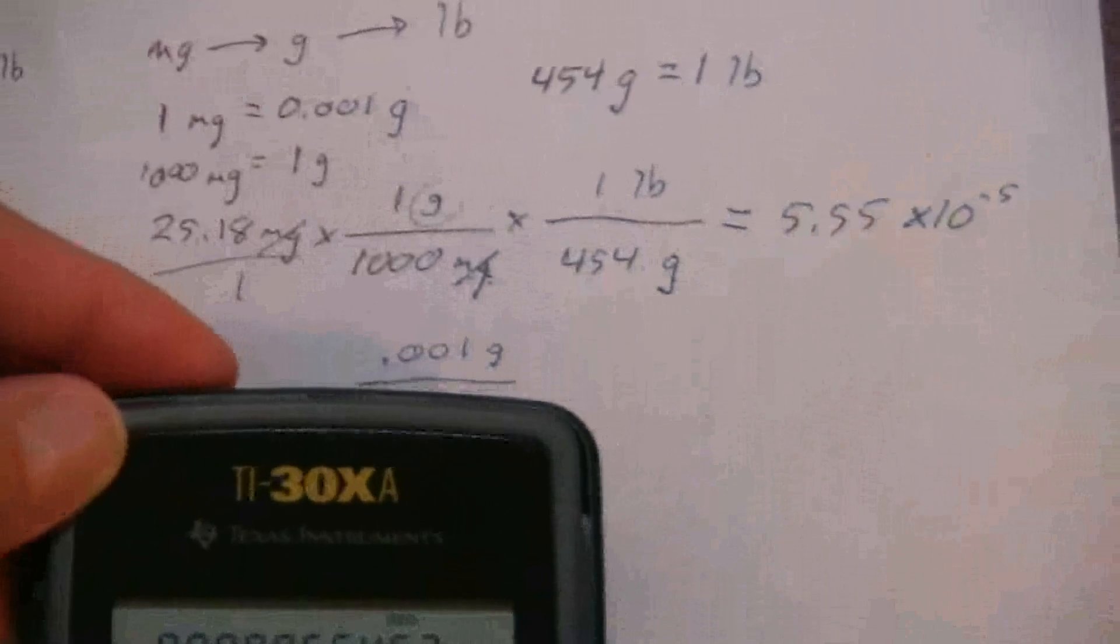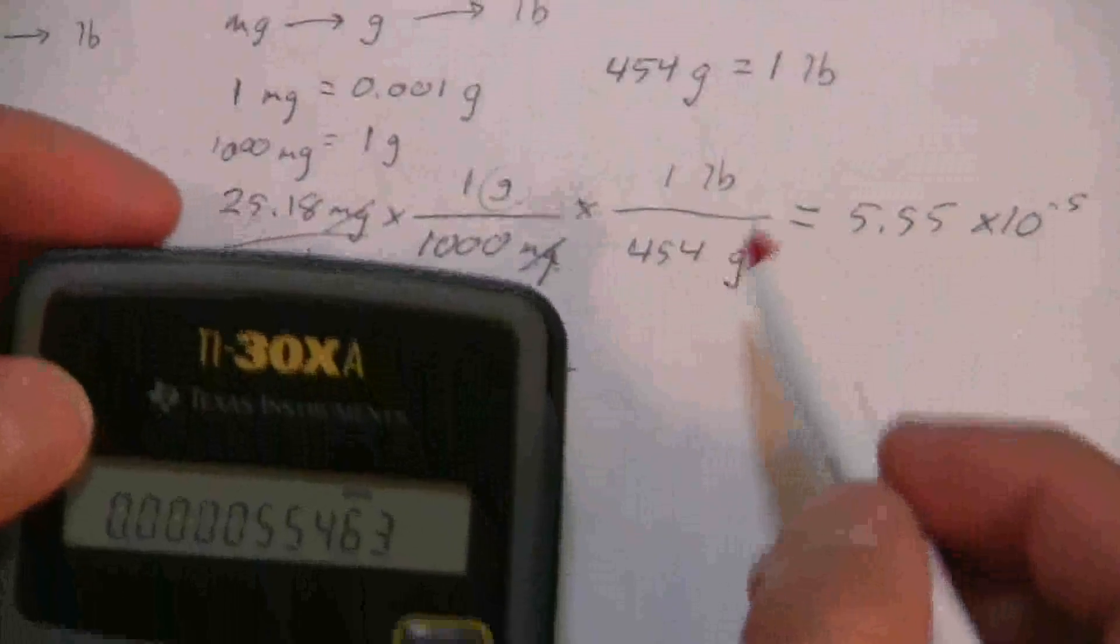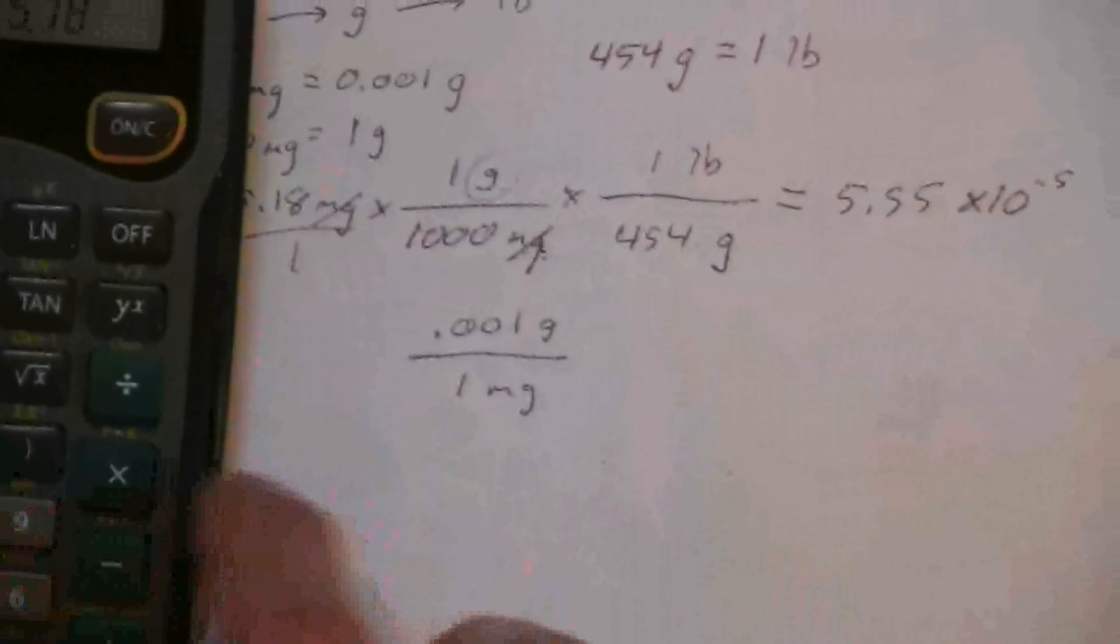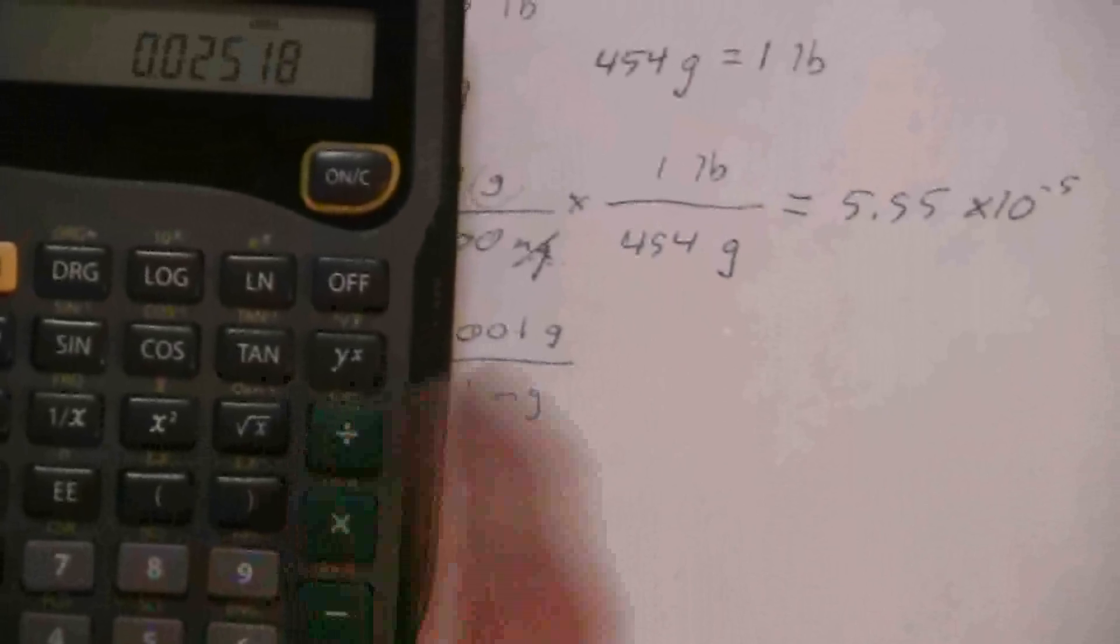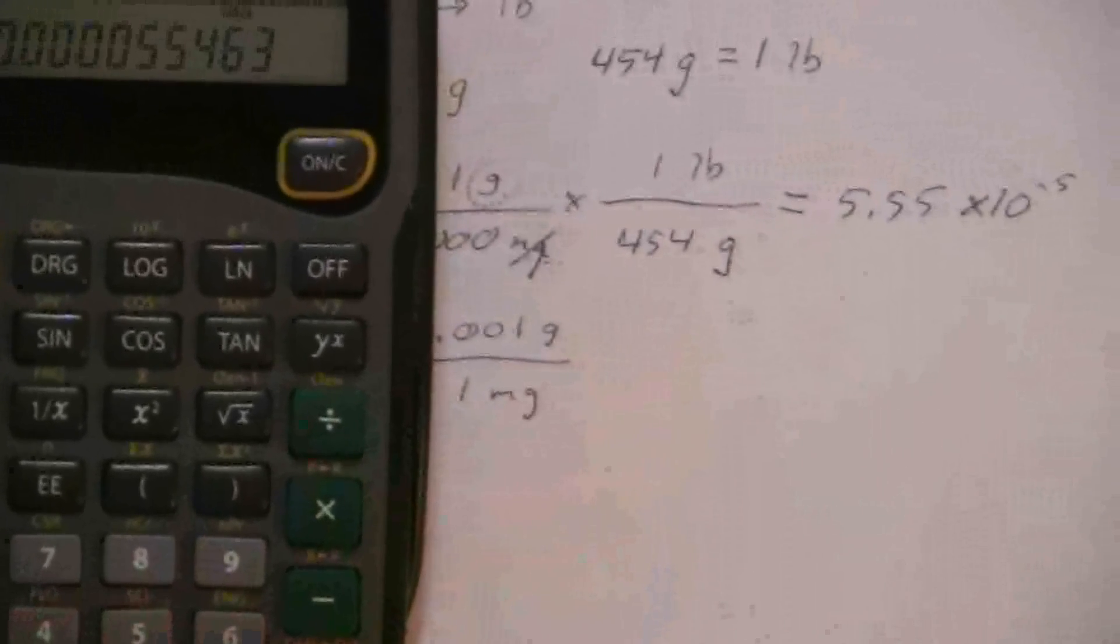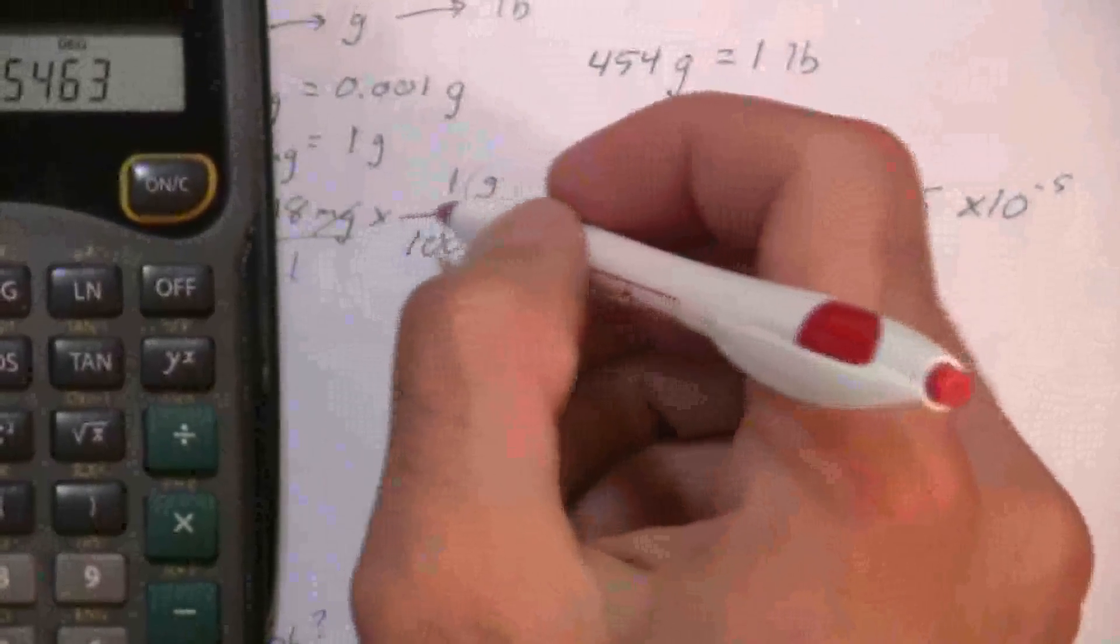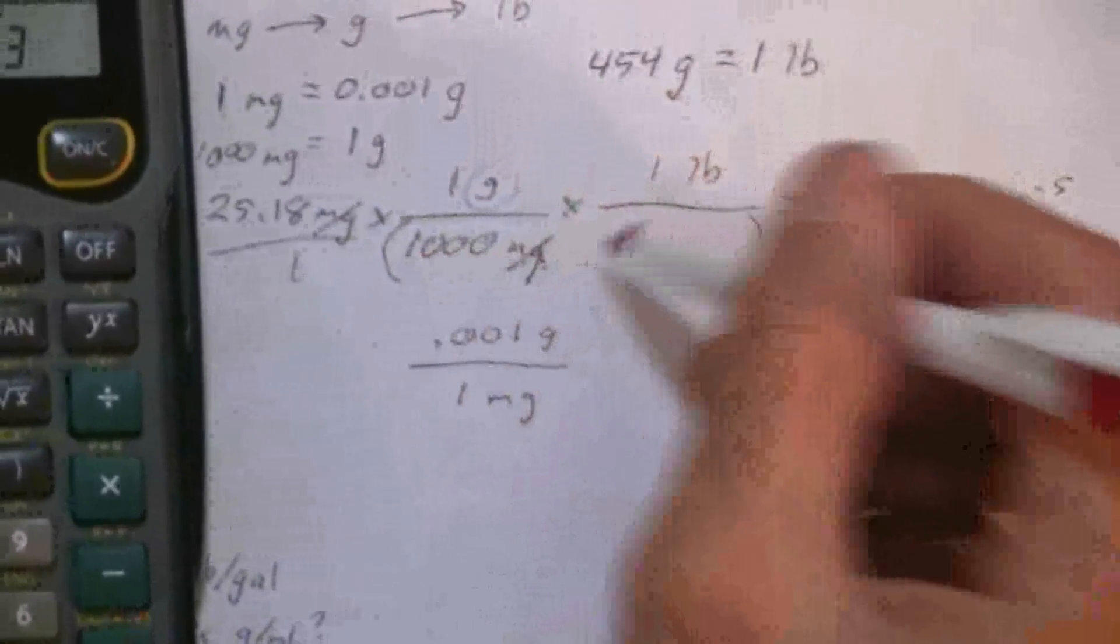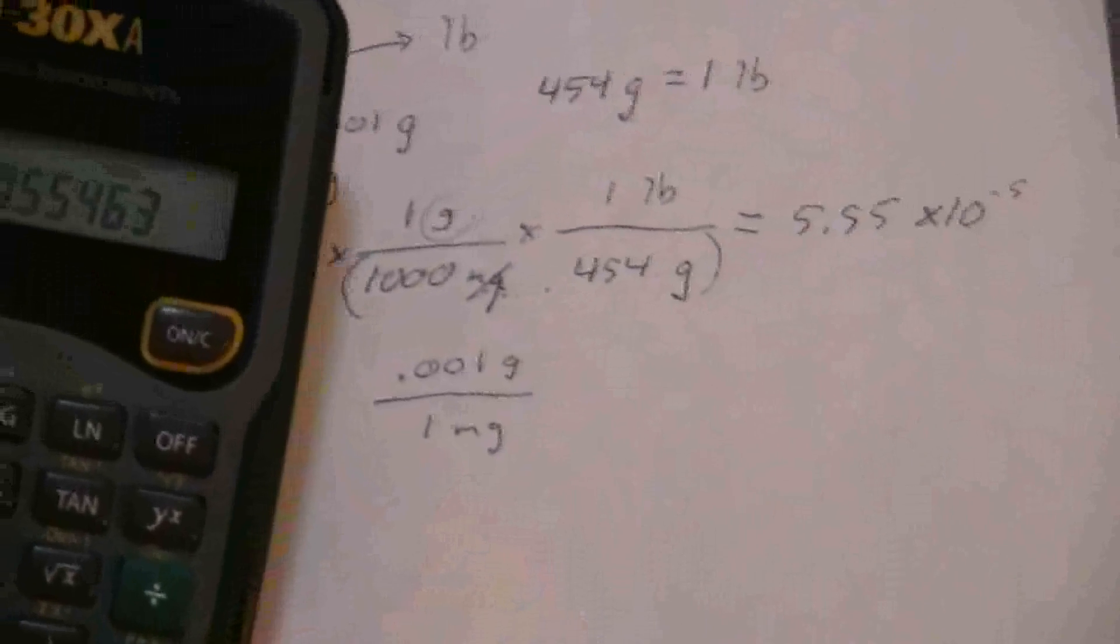Okay, so one thing when you're entering this into your calculator, you'll notice that when I did this, I did 25.18 divided by 1000, and then divide it again by 454. Okay, so the reason you divide twice, every time it's a separate thing. Okay, because if you had parentheses in there, then you would say, okay, that's divided by 1000 times 454. Okay, sometimes that's more obvious than other times. So I just wanted to point that out. All right.